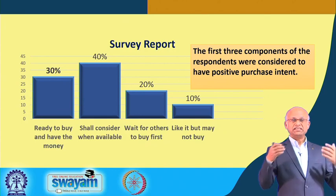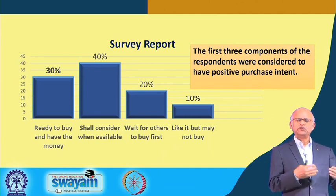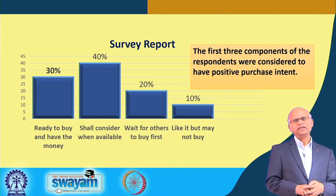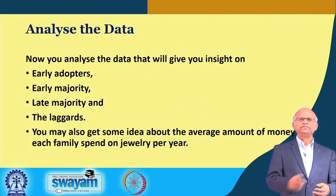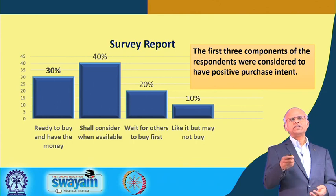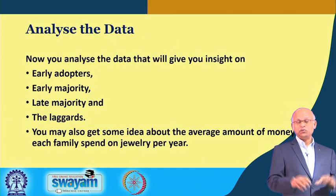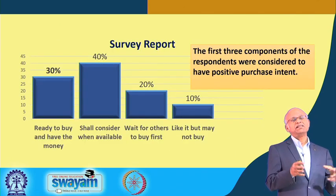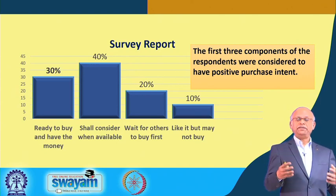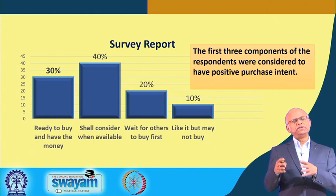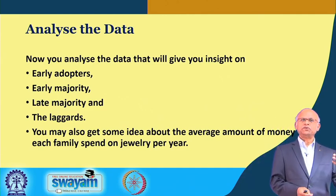Suppose this is the data: 30 percent are ready to buy immediately just from looking at the picture; 40 percent say they will consider when available but need to see the jewelry directly before deciding; 20 percent say they will see how other people react and if others say it is good then they will buy; and 10 percent say they may not buy. The first three groups have positive purchase intent. You can see that the 30 percent are early adopters, the 40 percent are the early majority, the 20 percent are the late majority, and the 10 percent are the laggards — this classification is now done based on market research.